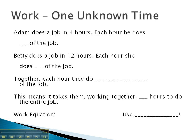If Adam does a job in 4 hours, it would be a reasonable deduction that each hour he gets 1/4 of the job done.